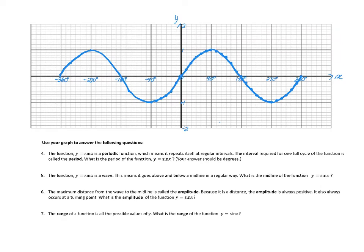Question 4: The function y = sin x is a periodic function, which means it repeats itself in regular intervals — you can see this from the wave-like pattern. The interval for one full cycle is called the period. A full cycle is when you start again: starting here, go up to 1, down to 0, down to negative 1, and back to 0. That's a full cycle — 360 degrees.